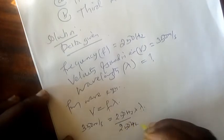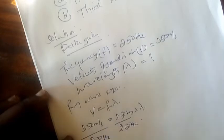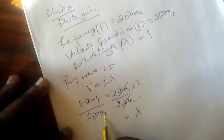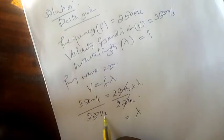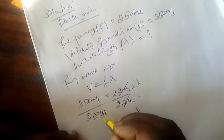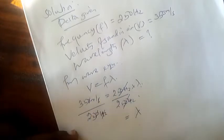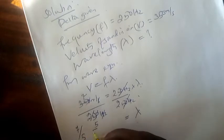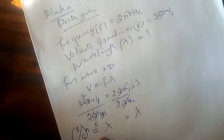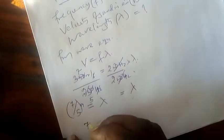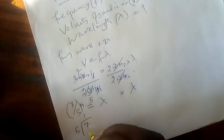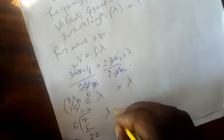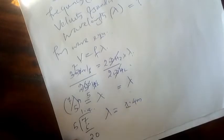We divide by 250 Hz on both sides. 250 Hz will cancel. So we remain with wavelength equals. The SI unit of frequency is per second. If it is per second, these will cancel. We remain with meters only. 350 divided by 250 is 7 divided by 5, which equals 1.4 meters. We've now found the wavelength.